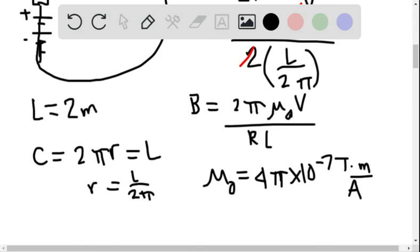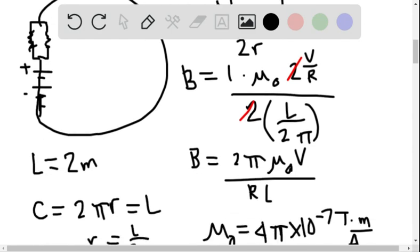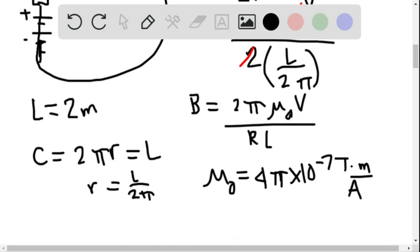So I got 2 pi mu zero over RL. R is 1050, L is 2. All right, so that gave me 3.38 times 10 to the negative 11th tesla. So I'm wondering though, what if we made 2 loops?